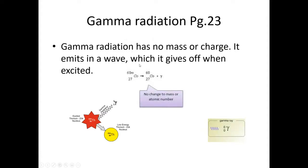Gamma radiation has no mass or charge. It emits in a wave, which it gives off when excited. The symbol for gamma is a zero-zero representation. When it comes to balancing, what's on the left must also be on the right. So 60 over 27 on the left equals 60 over 27 on the right, plus the gamma symbol with zero zero. So it balances. You need to know alpha, beta, and gamma because this is leading up to nuclear equation balancing.